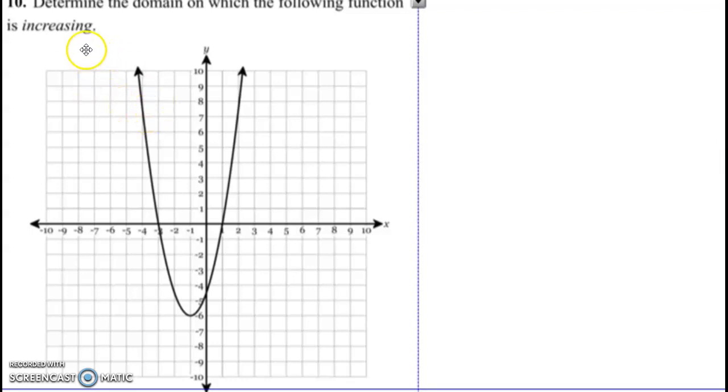This one says determine the domain for which the following function is increasing. So it's going to go up from here. Don't get confused with Y - we're only looking at the X domain. From negative 1, all the way going up to infinity - and not infinity going on the Y but infinity on X, so keep going out until infinity. So it's negative 1 to infinity.